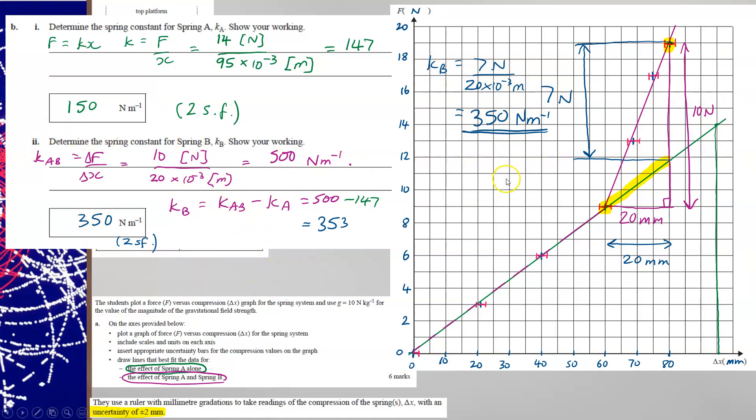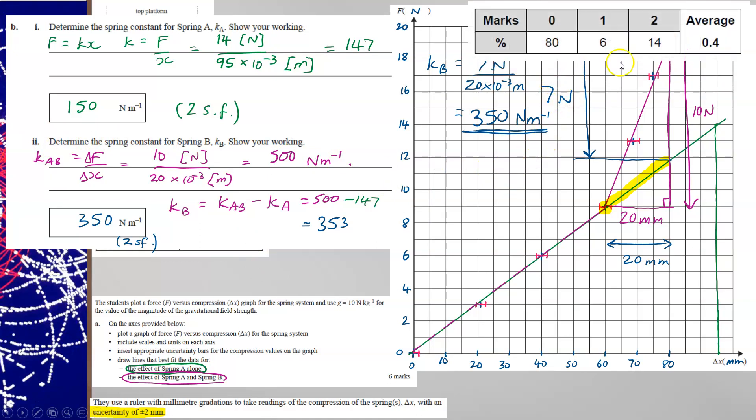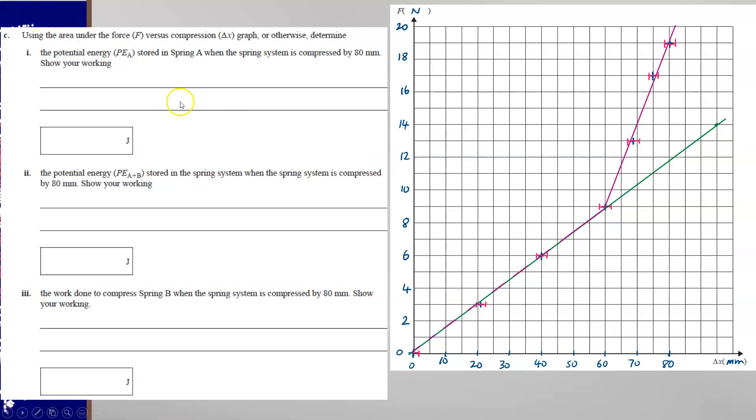Now question part two was only answered correctly by 14% of the state. Part C asks you to consider energies. Now it says using the area under the force compression graph or otherwise.